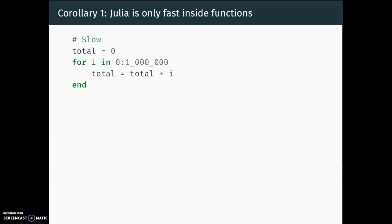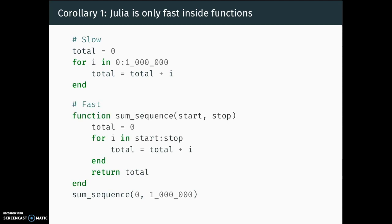This leads to a couple of notes for thinking about performance in Julia. First, Julia is only fast inside functions — when it sees a function it knows it has a nice self-contained thing and can compile it efficiently. If you just type code interactively into your console, it'll run at about the speed of Python. But if you do everything wrong, you get Python. By contrast, if you just wrap code in a function, you'll get several orders of magnitude speedup. So the first rule in Julia: put everything in a function.